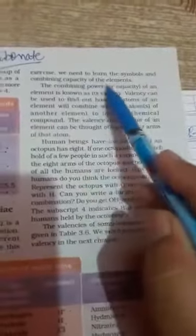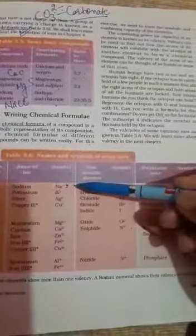For this exercise, we need to learn the symbols and combining capacity of elements. So first of all, we have to learn all these symbols and their combining capacity, like sodium Na+,